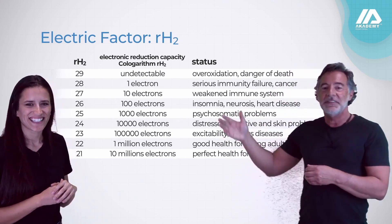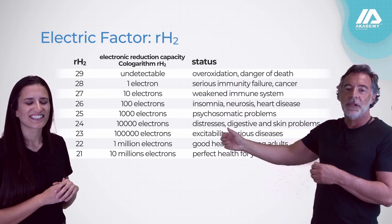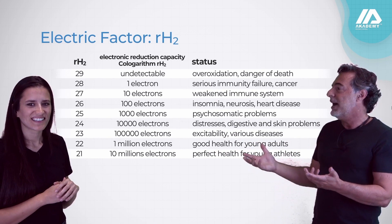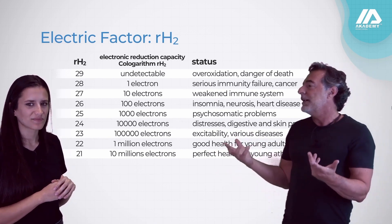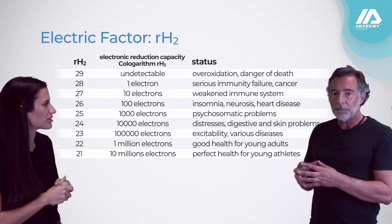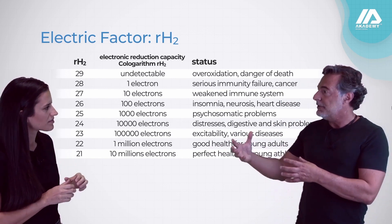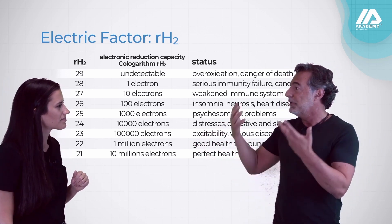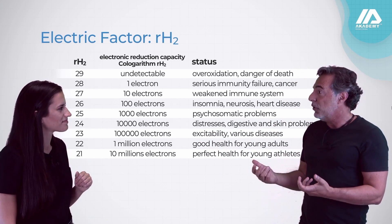As you can see, to have very good and perfect health, you should have 10 million free electrons. The ideal RH2 value is 21. Because electrons give your body the capacity to have electricity. This is our core concept.